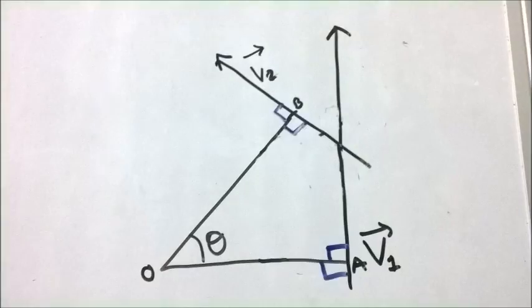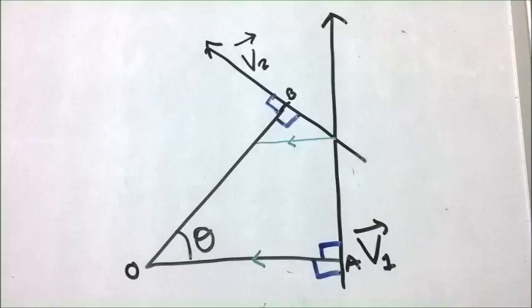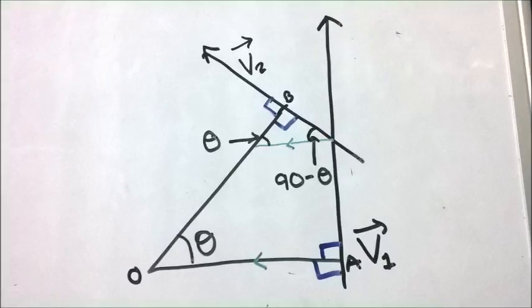Since v1 and v2 are tangents to the circle, they will be perpendicular to the radii. Now, let us draw a line parallel to OA. From that, we can figure out the angles of the new triangle formed.